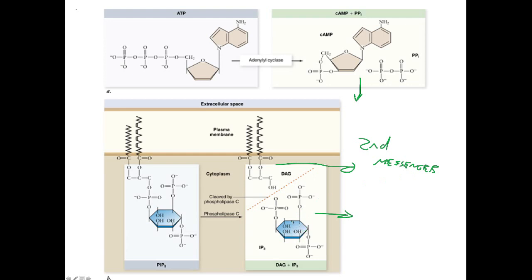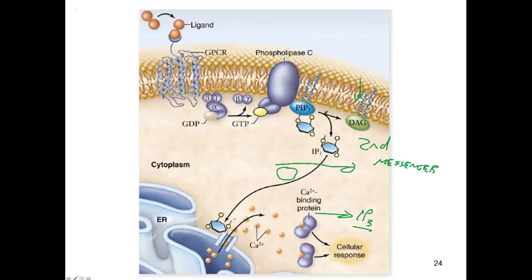Inositol triphosphate is the soluble product caused by the cleavage of PIP2 by phospholipase C. Let's remember what IP3 does and look at some examples of how it has an effect. We'll briefly consider diacylglycerol as well and then move on to cyclic AMP as a second messenger. Phospholipase C cleaves PIP2 into diacylglycerol and IP3.